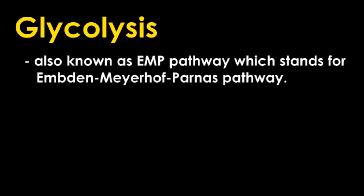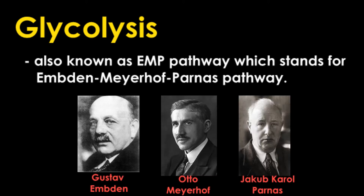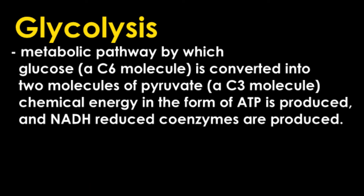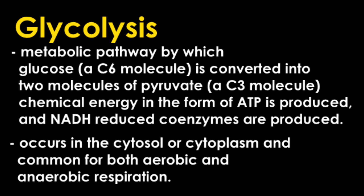Let us now proceed to the definition of each term, starting with glycolysis. It is also known as the EMP pathway, which stands for the Embden–Meyerhof–Parnas pathway, discovered by these three persons. Glycolysis is the metabolic pathway by which glucose is converted into two molecules of pyruvate. Chemical energy in the form of ATP is produced, and NADH reduced coenzymes are produced.